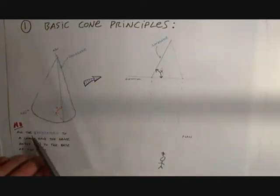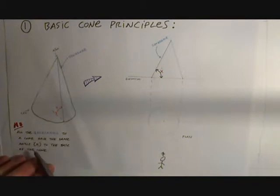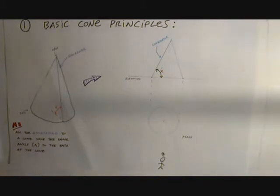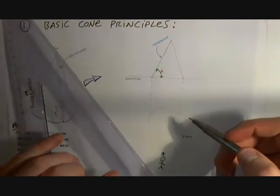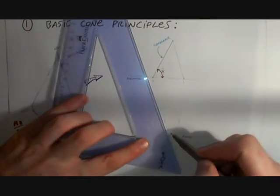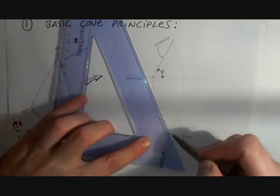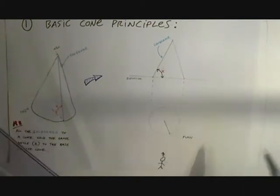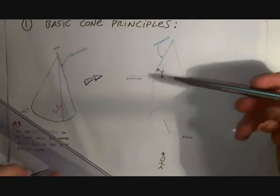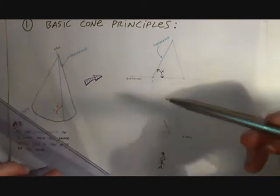Going back to the principle that all the generators to the cone have the same angle x to the base of the cone — to look at this further, if we took a generator from the apex to any point on the cone and look at it in elevation, we should find that it has the angle x.